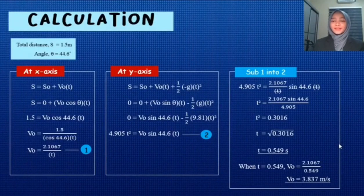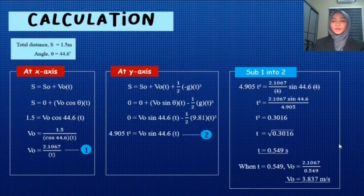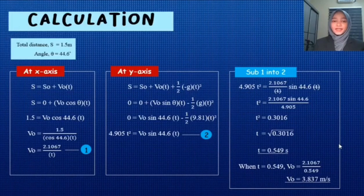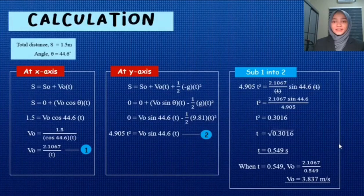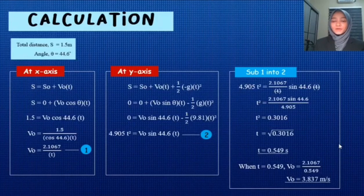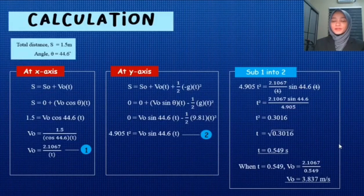Assalamualaikum and hello, I am Nour Afiqa Nour Binti Zaham and will explain about the calculation based on our projectile motion experiment. From our experiment, we can derive it into x-axis and y-axis. First of all, we will look into the x-axis first. We can use four basic formulas because the acceleration is constant. So we decide to use this basic formula because the value of total distance is given which is 1.5 meter. So we substitute the value of total distance and angle into the formula and we got the first equation which is V0 equal to 2.1067 over T.